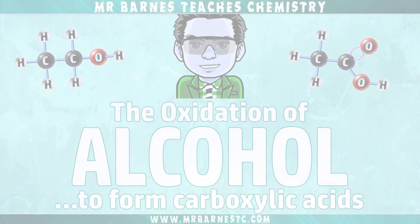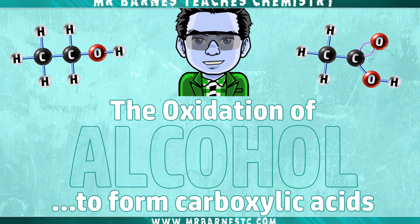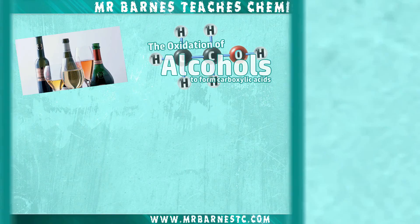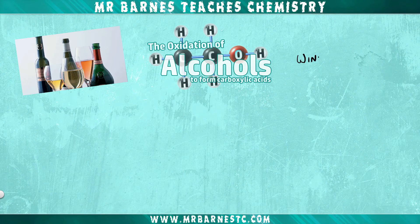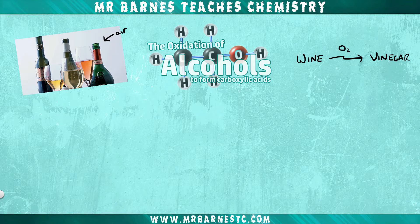Welcome to this video looking at what happens when alcohols such as ethanol are exposed to air. As you may know, alcoholic drinks contain ethanol, but when wine is opened, the ethanol gets turned into a carboxylic acid called ethanoic acid, or vinegar. This happens by reacting with the oxygen in the air — we say it has been oxidized.